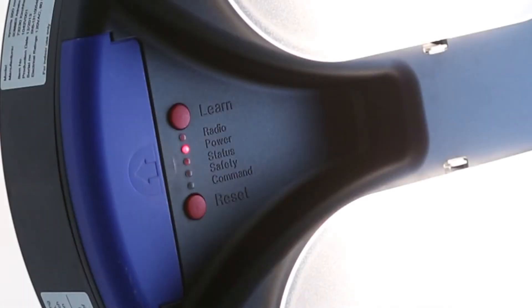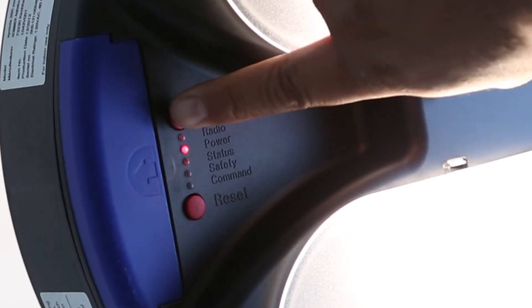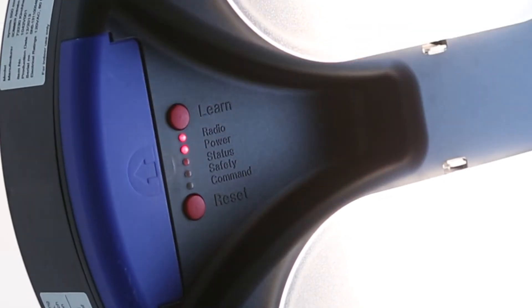On your garage door opener in the garage, locate the learn button. Press and release the learn button and the indicator light will begin blinking.